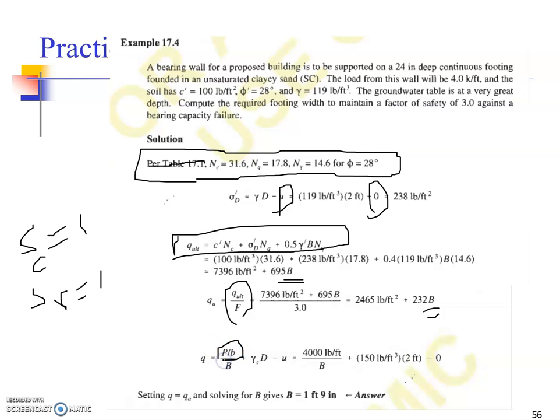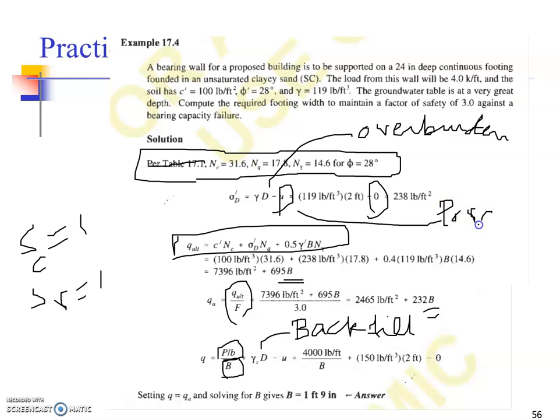We all know that our loading should be equal to the linear load divided by the width of the foundation, plus the backfill. This term is called backfill, and this term is called surcharge or overburden. This is the pore water pressure. You determine the value of b by equating it with your allowable bearing capacity.